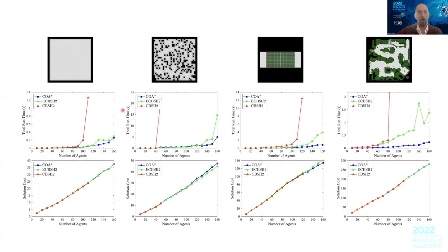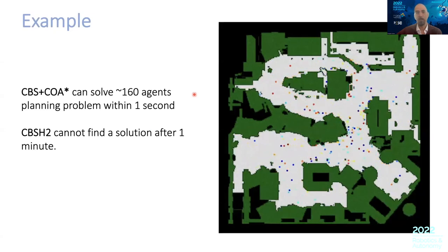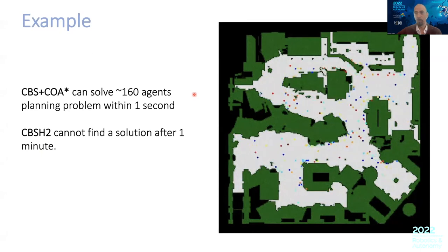Here is how our algorithm scales compared to the state of the art. There are better versions of CBS — the enhanced CBS shown in blue. We still beat the state of the art for most scenarios. To convince you how this works: with 160 agents, our algorithm can solve the planning problem in less than a second, while the standard conflict-based search cannot find a solution in one minute.